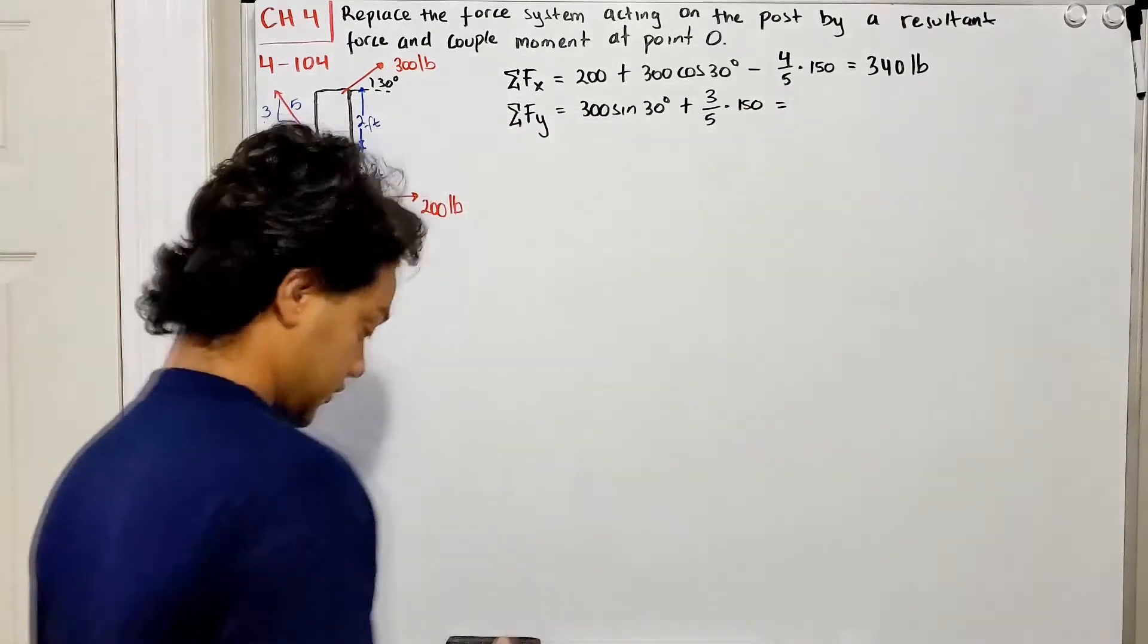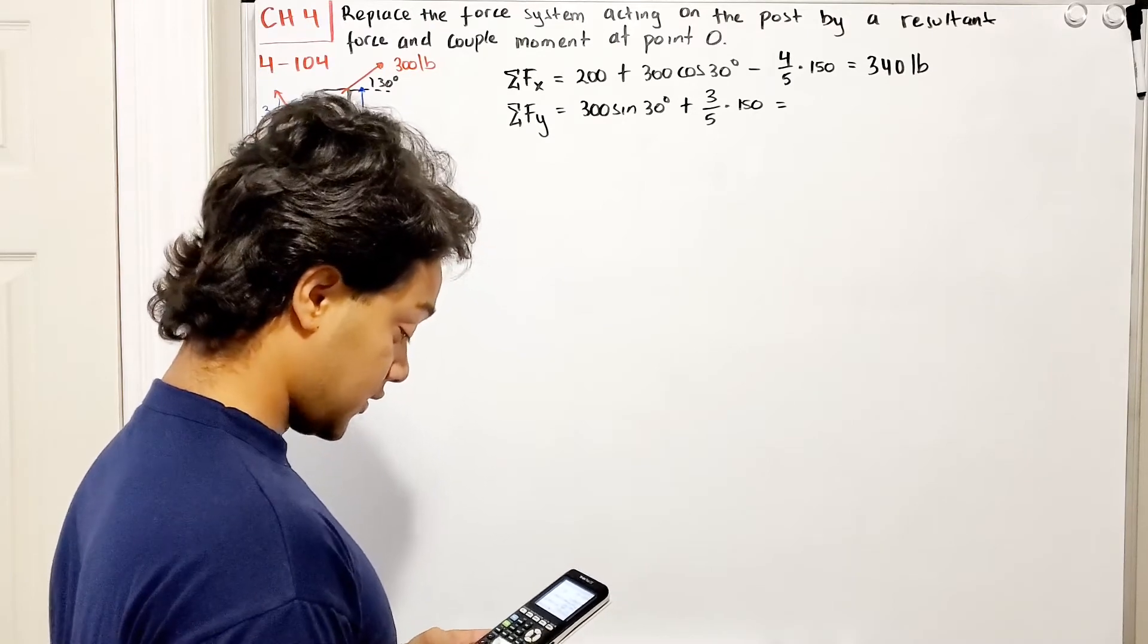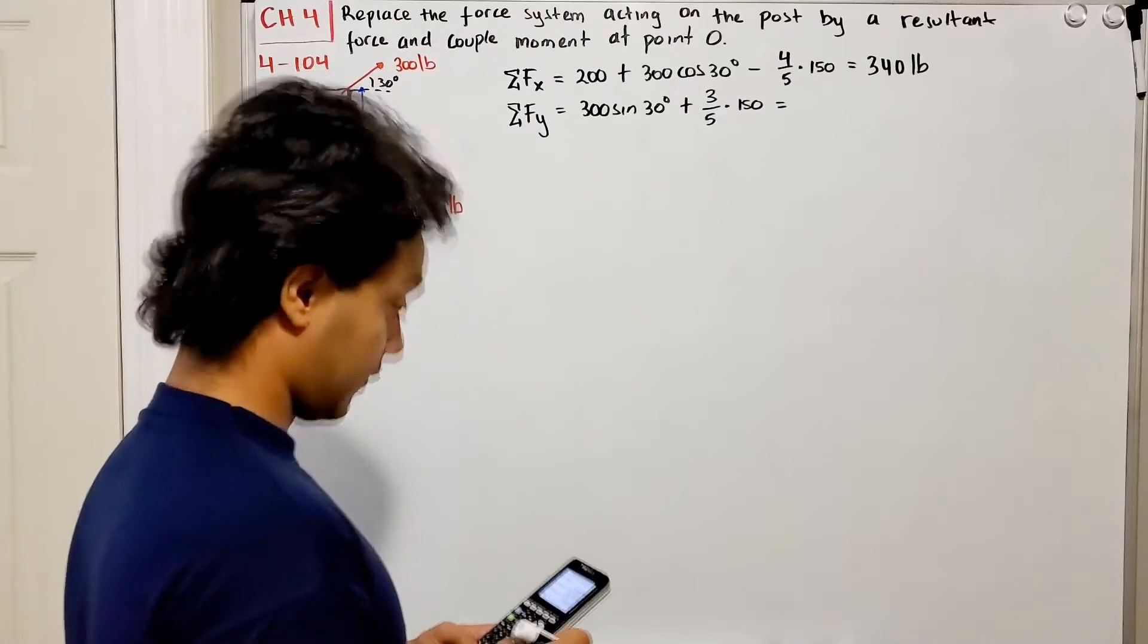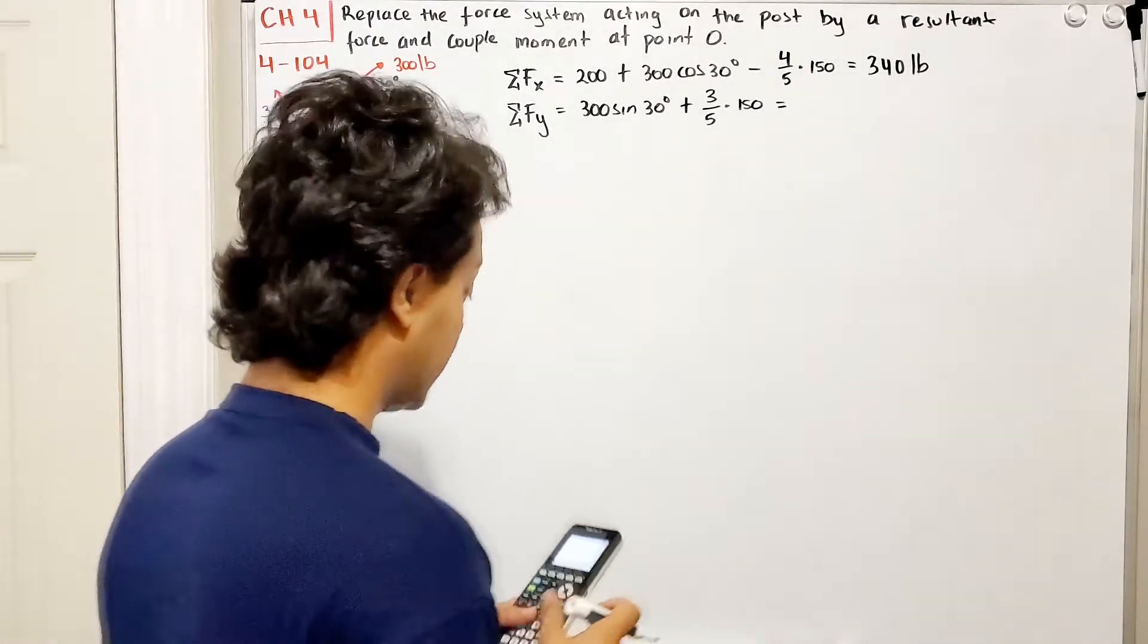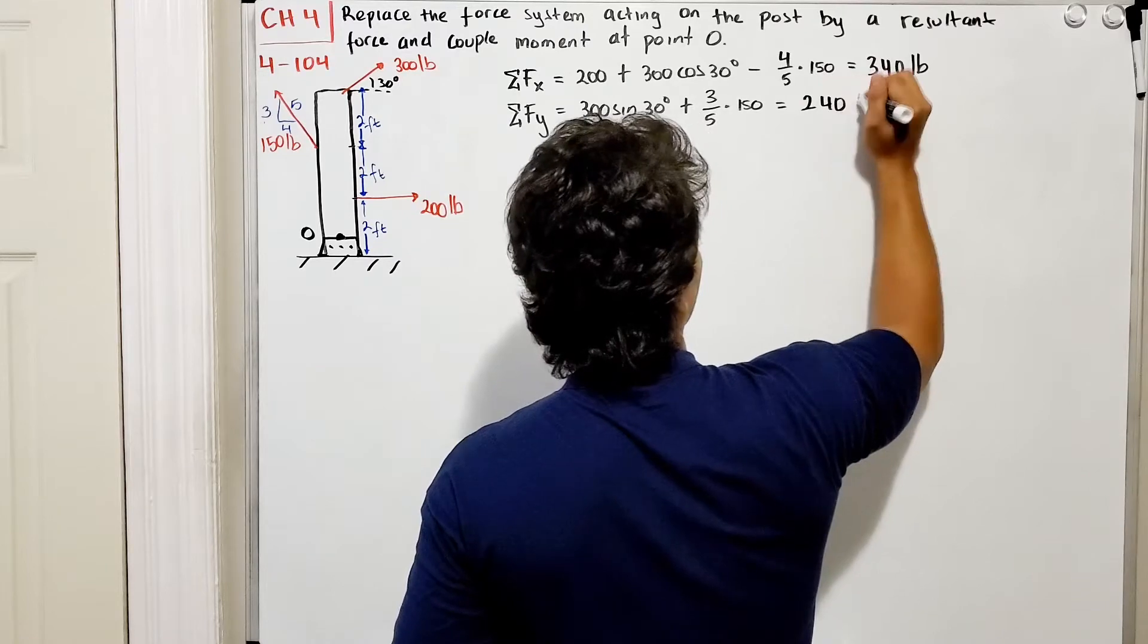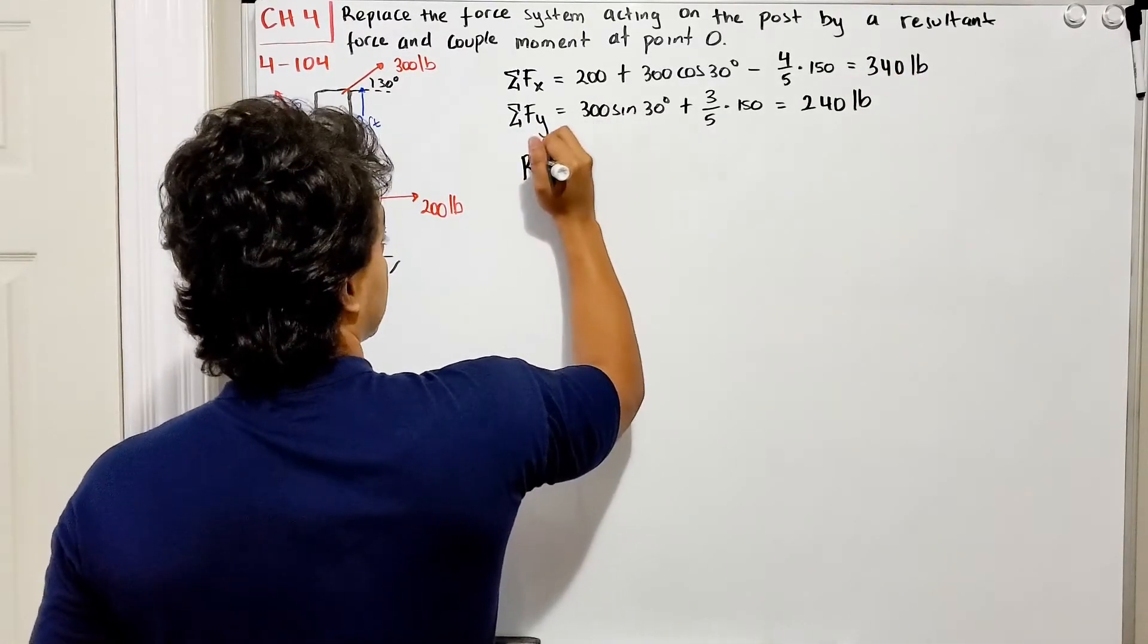Let's check how much this is. 300 multiplied by sine of 30 degrees plus three-fifths multiplied by 150, and this gives me a total of 240 pounds.